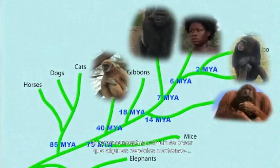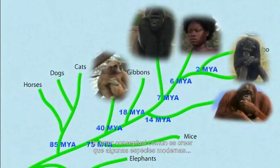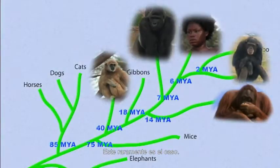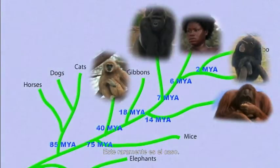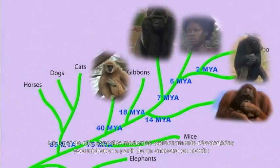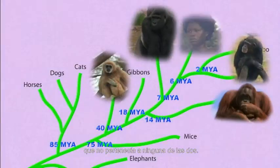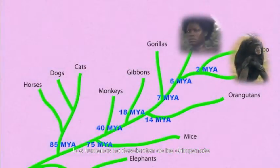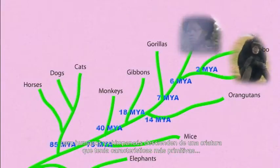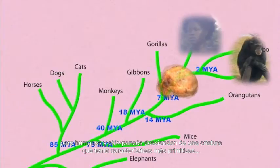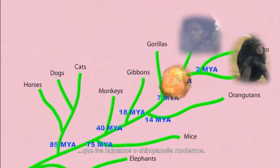A common misconception is that some modern species are descended from other modern species. This is rarely the case. Instead, closely related modern species evolved from a common ancestor — that is, neither one nor the other. Humans did not come from chimps. Both humans and chimps came from a creature that had more primitive features than either modern humans or modern chimps.